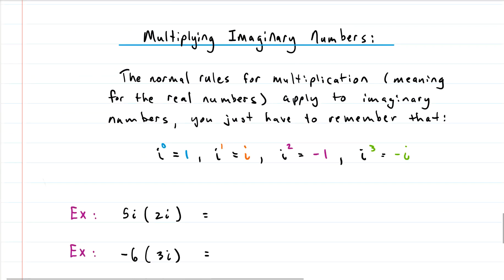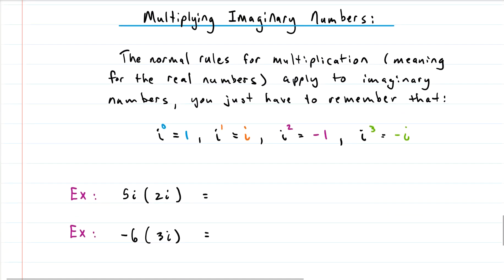How about multiplying imaginary numbers? This also follows the conventions of the real numbers, meaning the distributive property works—all of those things work. We just have to keep in mind these four little pieces of information. For example, when we multiply 5i by 2i, the 5 and the 2 give us 10, and the i and i give us i squared. But really, what is i squared? i squared is the same as negative 1, so we'll need to substitute that in: 10 times negative 1, which gives us negative 10. So 5i times 2i gives us negative 10. The second example: we have negative 6 times 3i. The negative 6 and the 3 give us negative 18, and we have the i, and we're done.